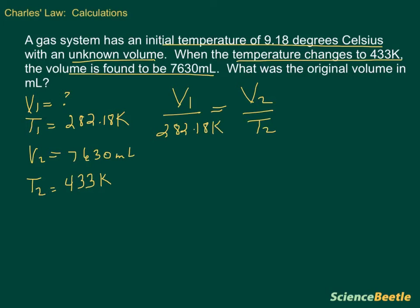We'll do the same thing for the V2. Our V2 we determine to be, according to what the problem is telling us, 7630 milliliters. And then we're going to replace T2. Our T2 is also given to us, and that is 433 Kelvin.